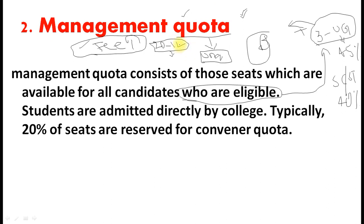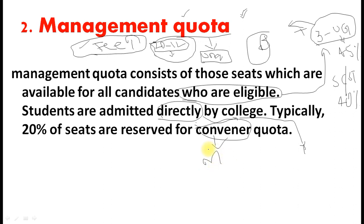Management Quota is not available in government colleges — it is only available in private colleges. You can go for Management Quota, but it is not very advisable because through Convener Quota you get fee reimbursement if eligible, which really saves your money. Students are admitted directly by the college through Management Quota. Typically 20% of the seats are reserved for Management Quota.